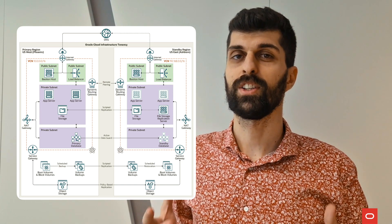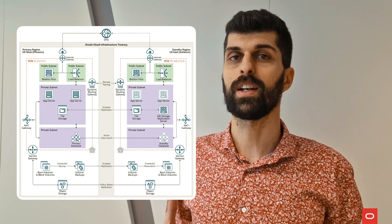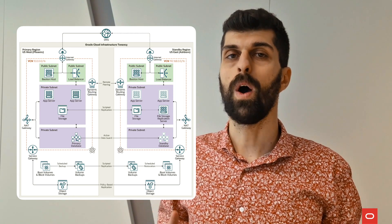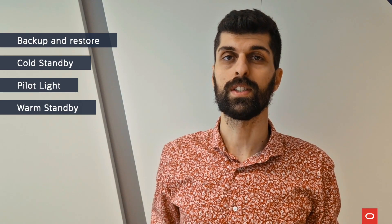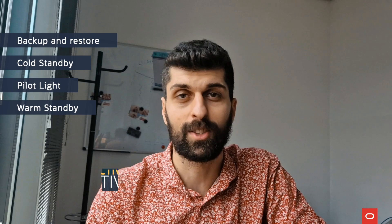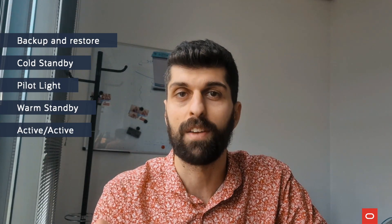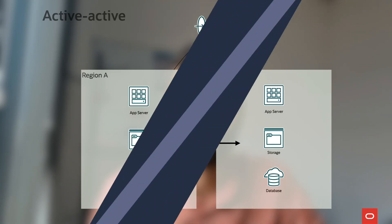Warm standby reduces the activation time because some services are always running at the DR site and they can start taking workload while others are still provisioning. If a disaster affects the primary site, you can quickly restore services by scaling up the DR site. The last option is an active-to-active configuration, which is the deployment of a second identical live infrastructure that continuously replicates from the first one.